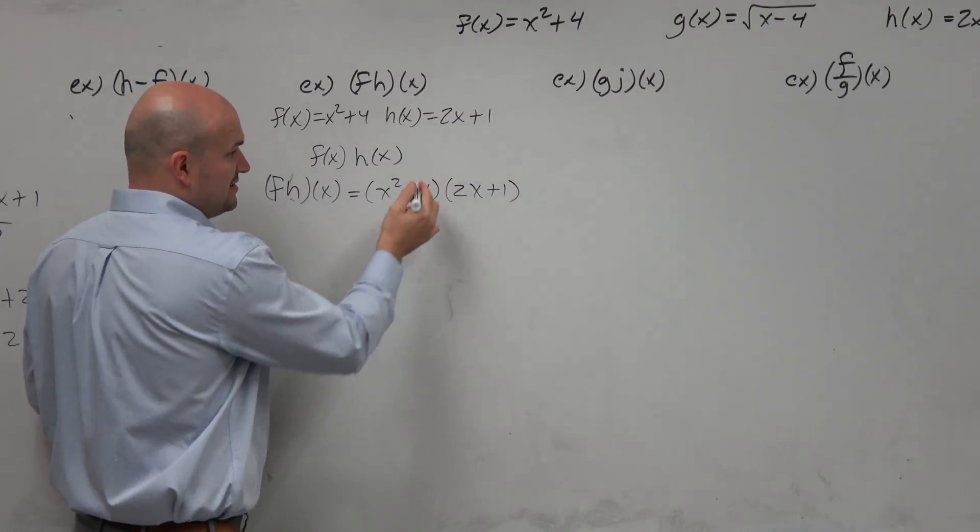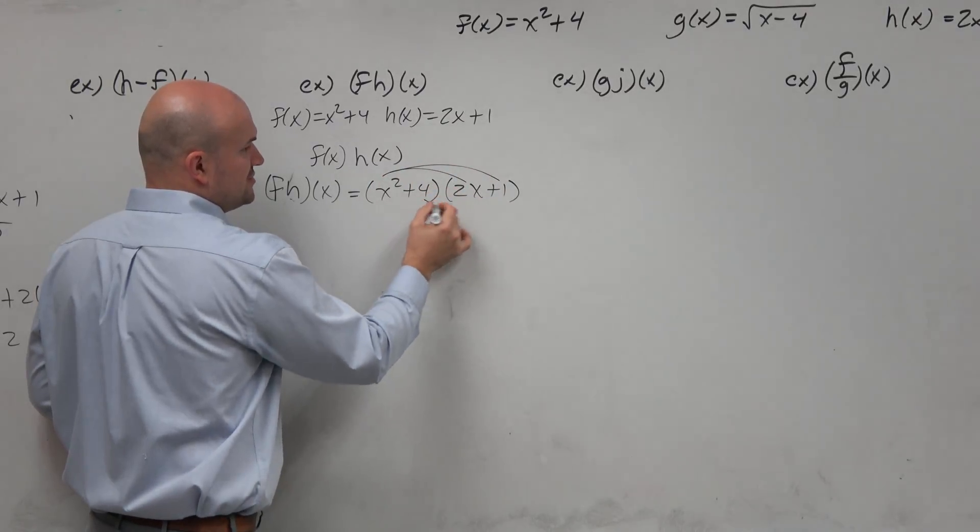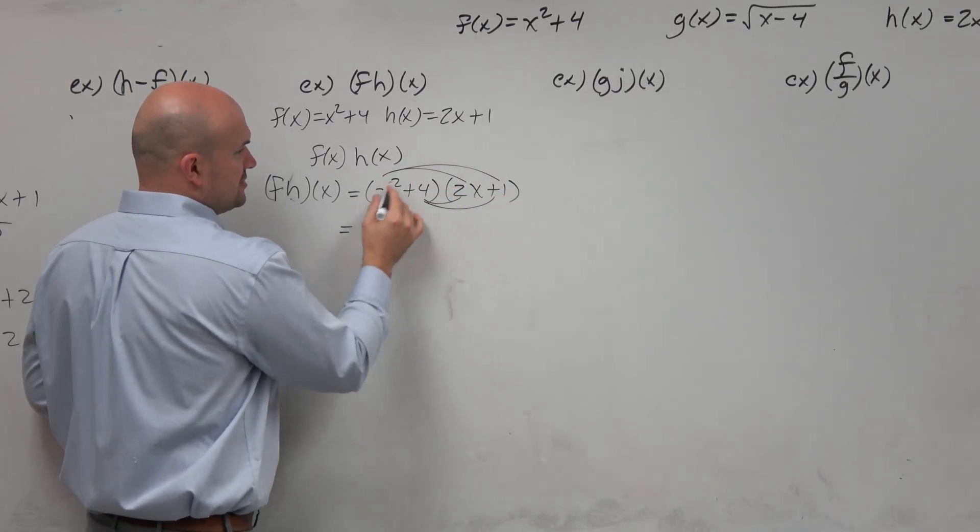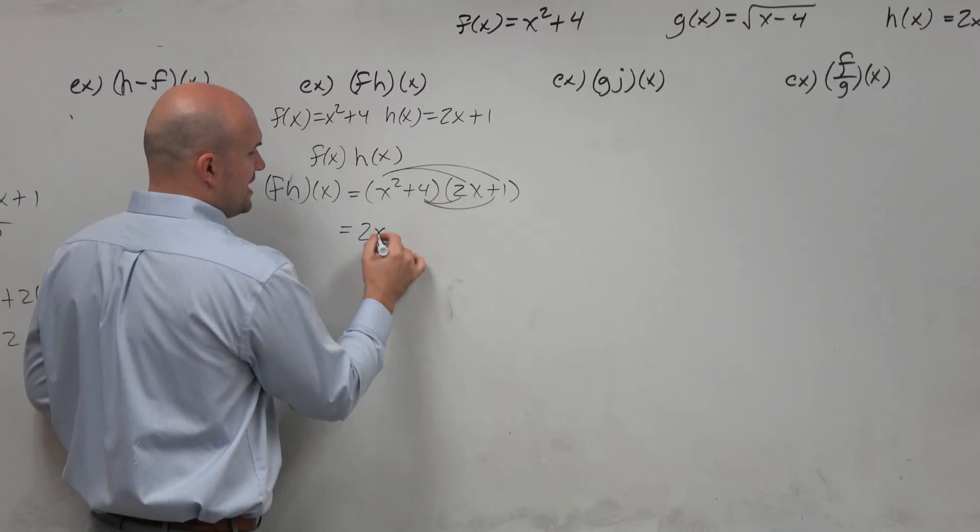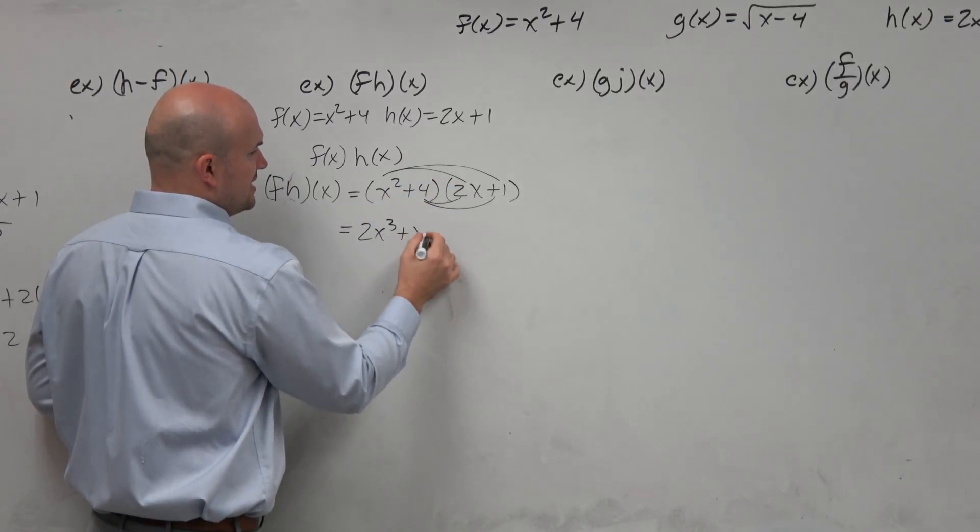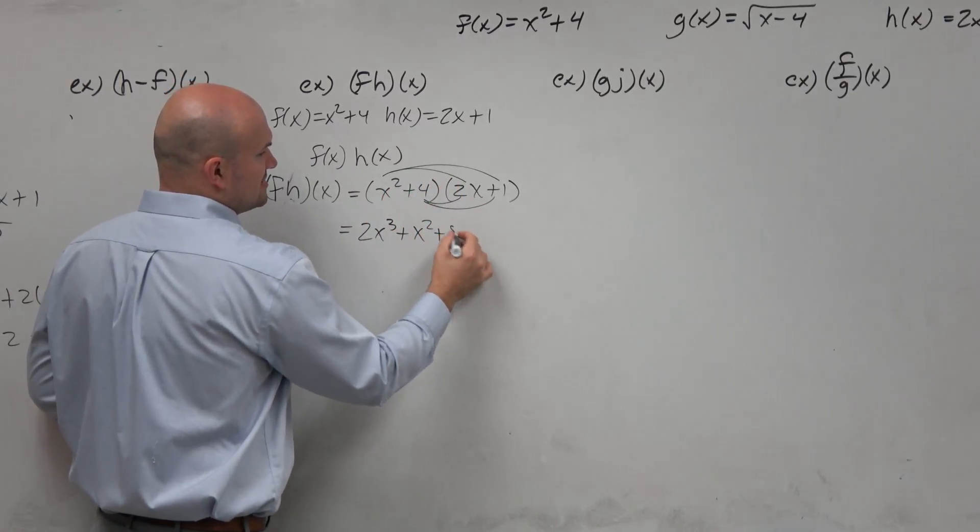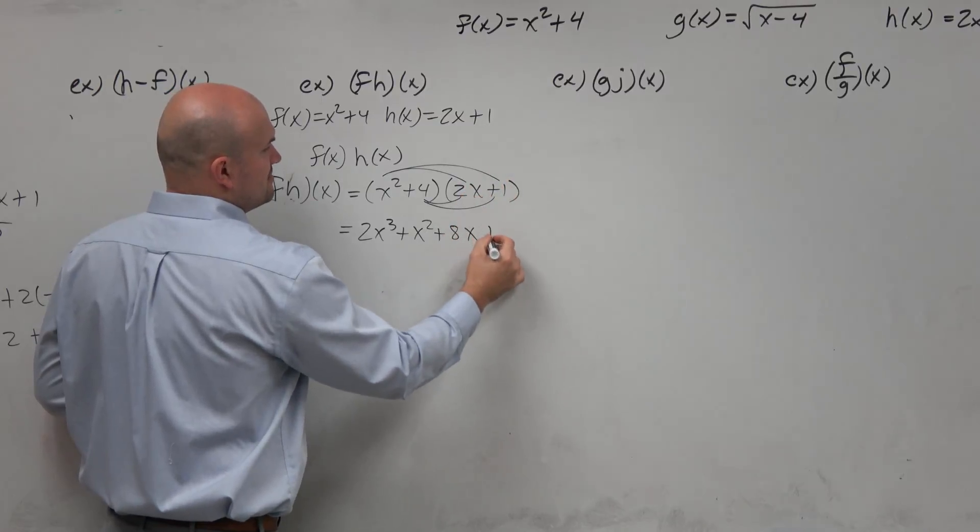So here you could use the FOIL method, which is another fancy way to remember the distributive property. So x squared times 2x is going to be 2x cubed. x squared times 1 is x squared. 4 times 2x is 8x. And 4 times 1 is positive 4.